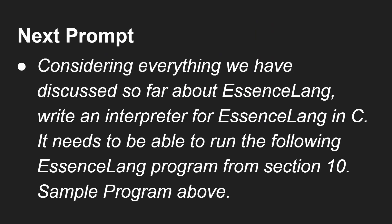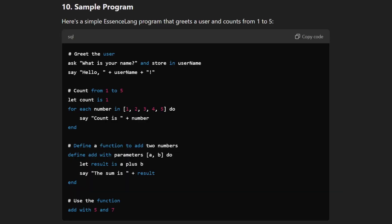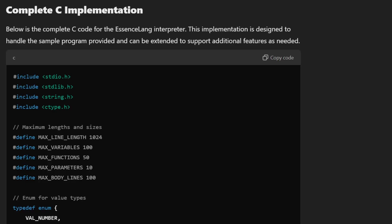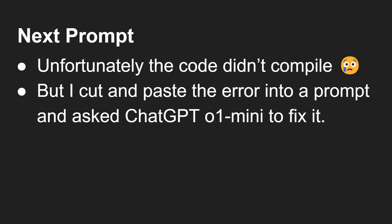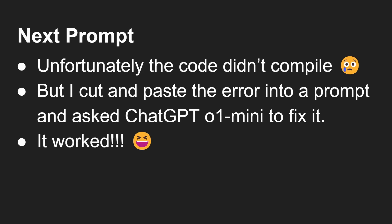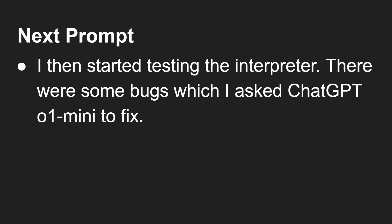The next step was to implement this as an interpreter. Using the existing context, I prompted: considering everything we've discussed about Essence Lang, write an interpreter for Essence Lang in C. It needs to be able to run the following Essence Lang program. It went ahead and created around 600 lines of C code. I pasted that into a file and compiled it — unfortunately it did not compile, but I pasted the error back in, asked it to fix it, which it did, and it then worked. I started testing the interpreter and it ran the sample program.